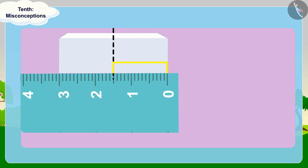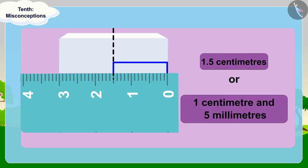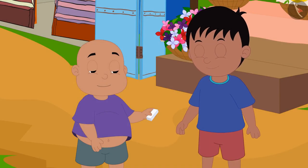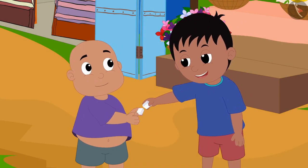Half of the eraser is 1.5 centimeters or one centimeter and five millimeters long. Raju and Babloo split the eraser in half.